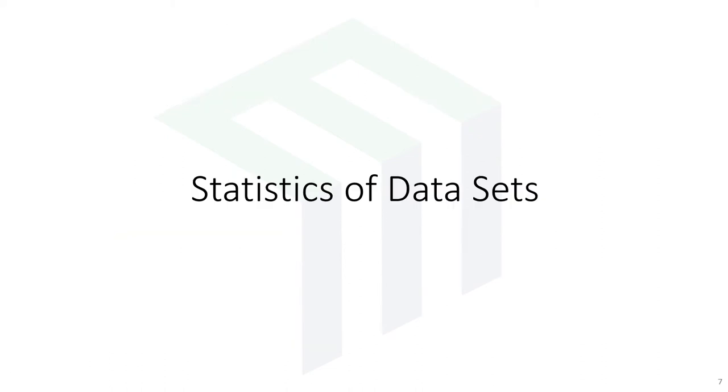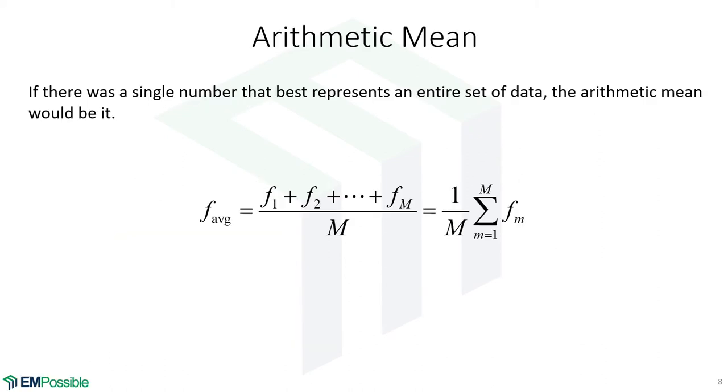Statistics of data sets. Probably the most common one is called the arithmetic mean. And this is basically a way, if we have a huge set of data, if we have to somehow reduce that to a single number, oh gosh, what on earth would that single number mean? It would probably be the arithmetic mean. It is the value that we choose that's closest to all the other values as possible.